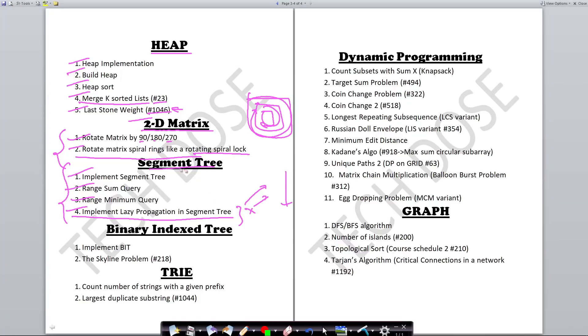The FAANG companies will obviously be asking these questions, so you should also prepare binary index tree, how to implement it, and the skyline problem from LeetCode #218. Trie is also a very simple and useful data structure—you need to do these two topics to get full understanding.